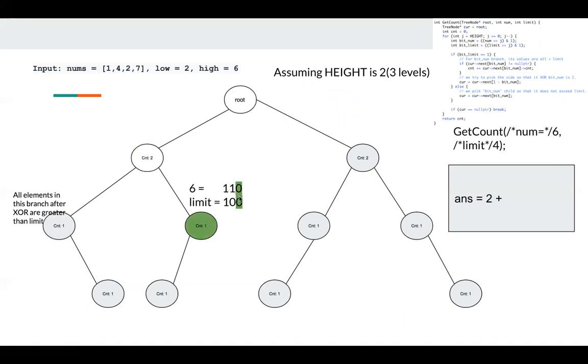Now limit is still 0, so the bit of limit is 0. We go to the else branch. BitNum is 0 in this case, so we go to the left part. So it works. This is our getCount function implementation.